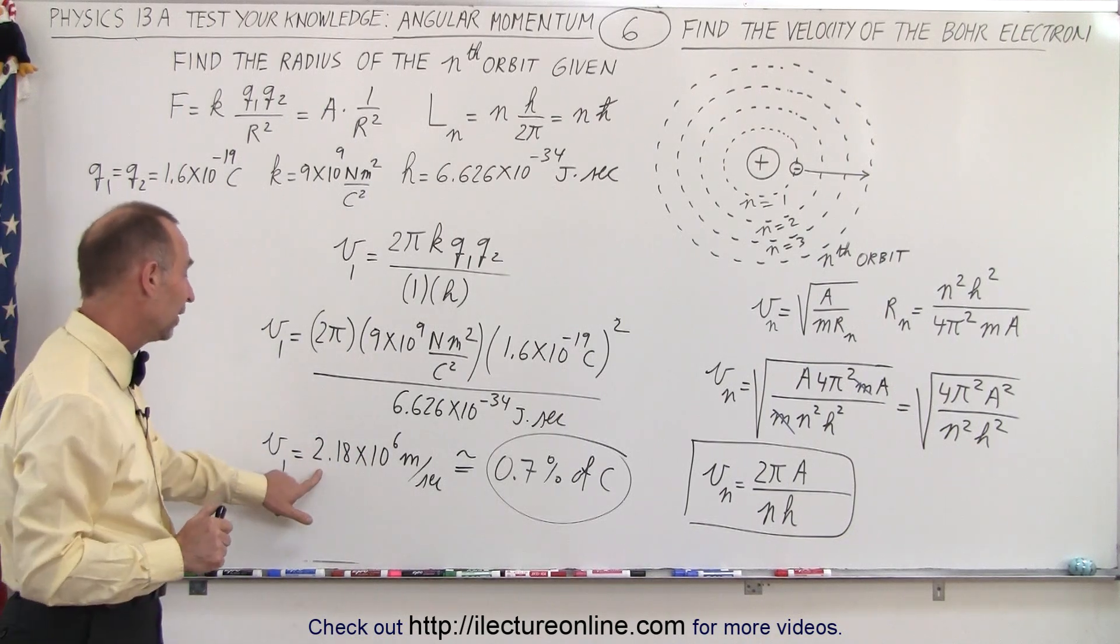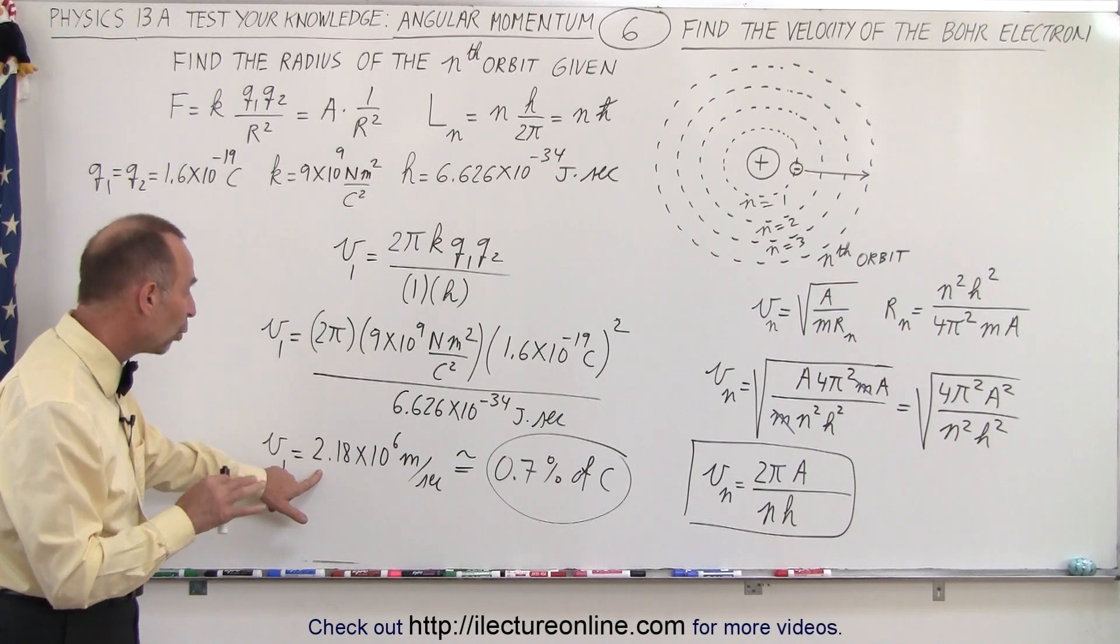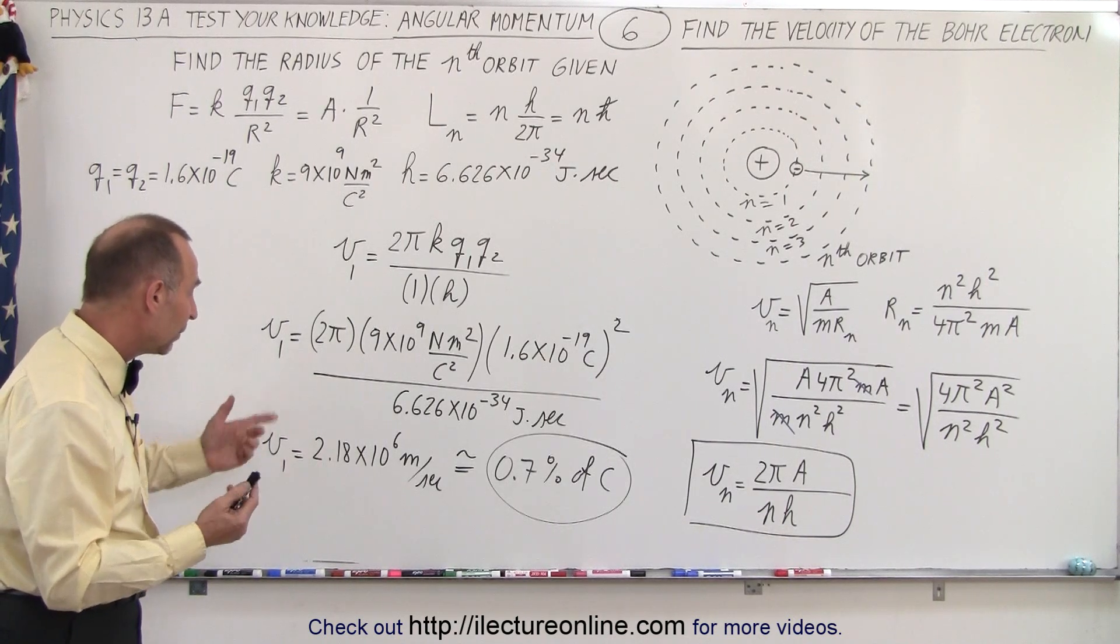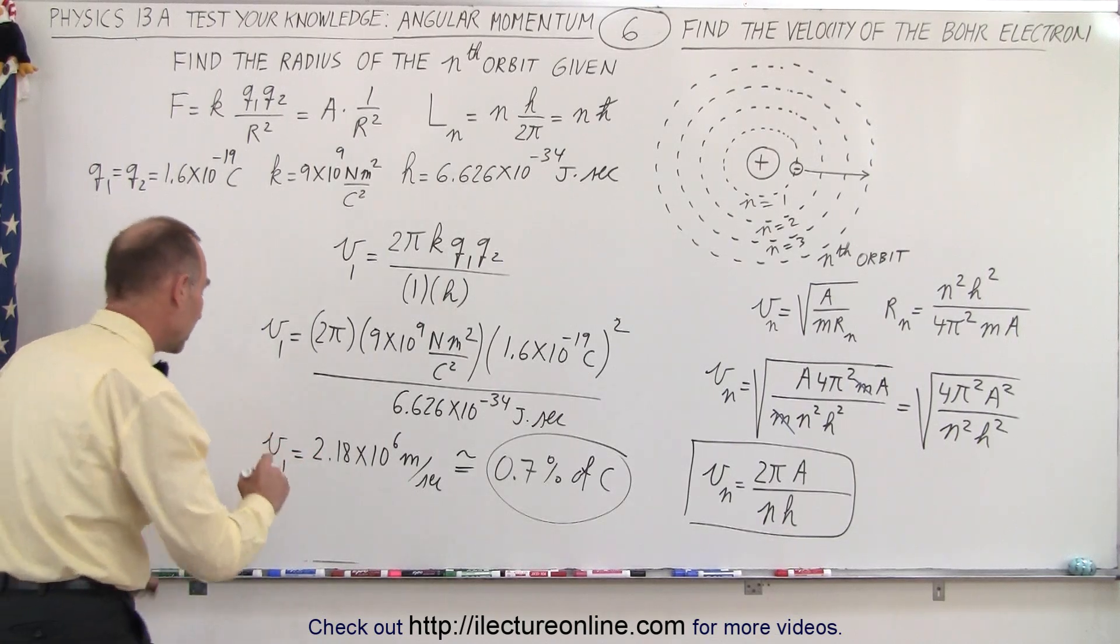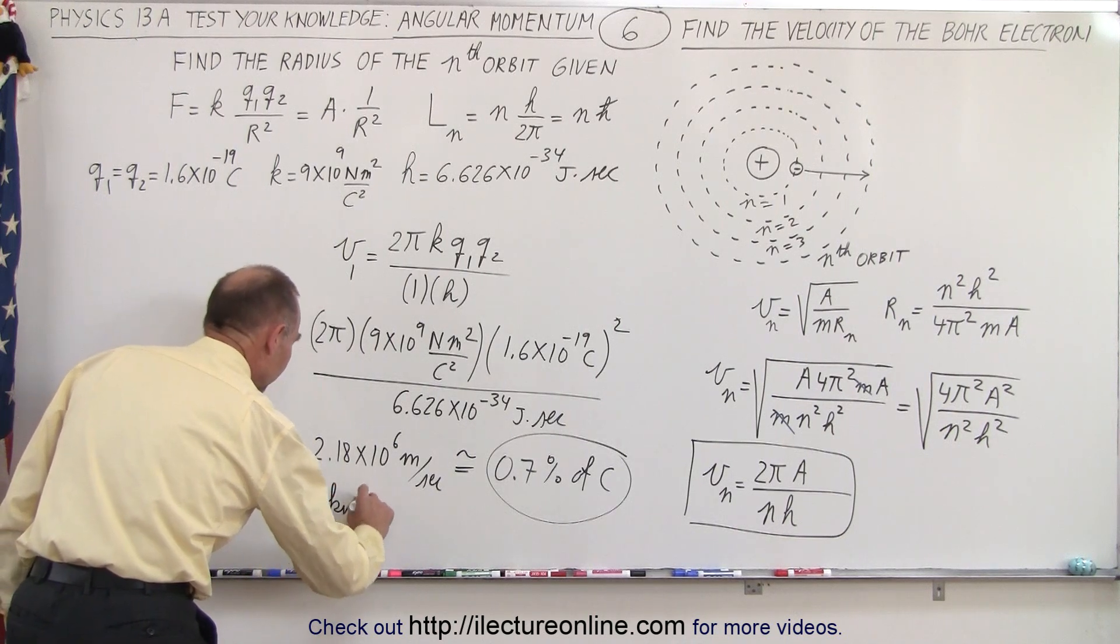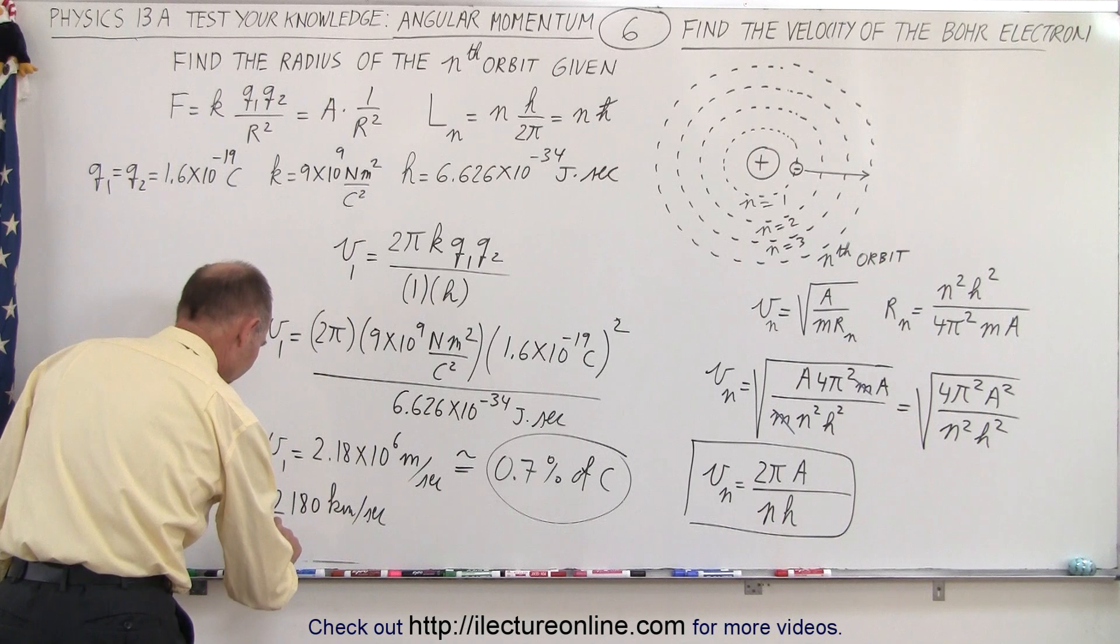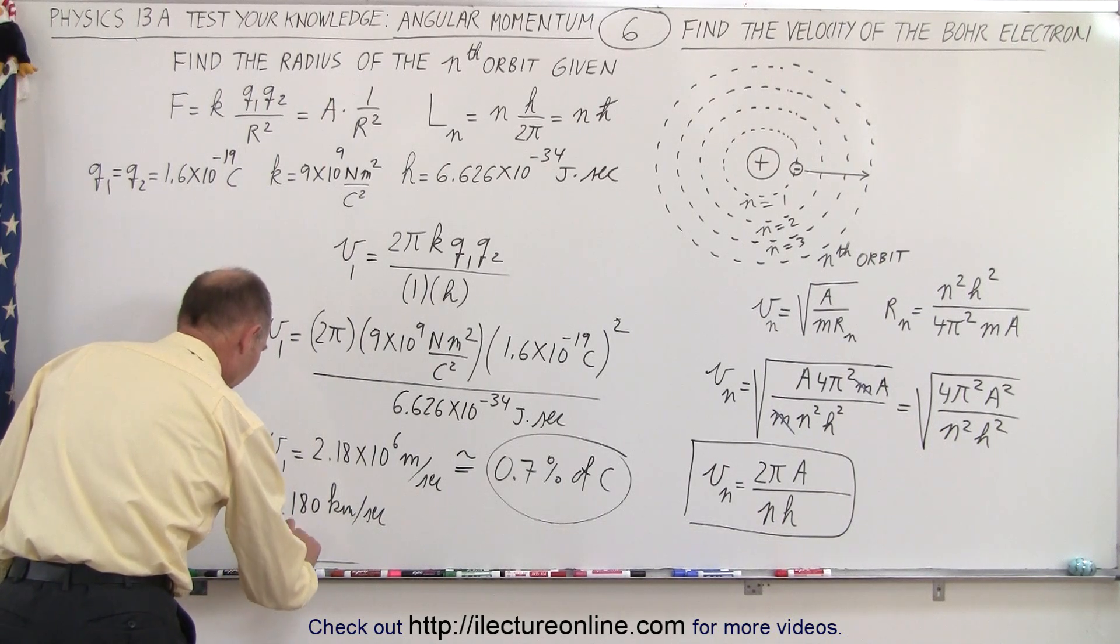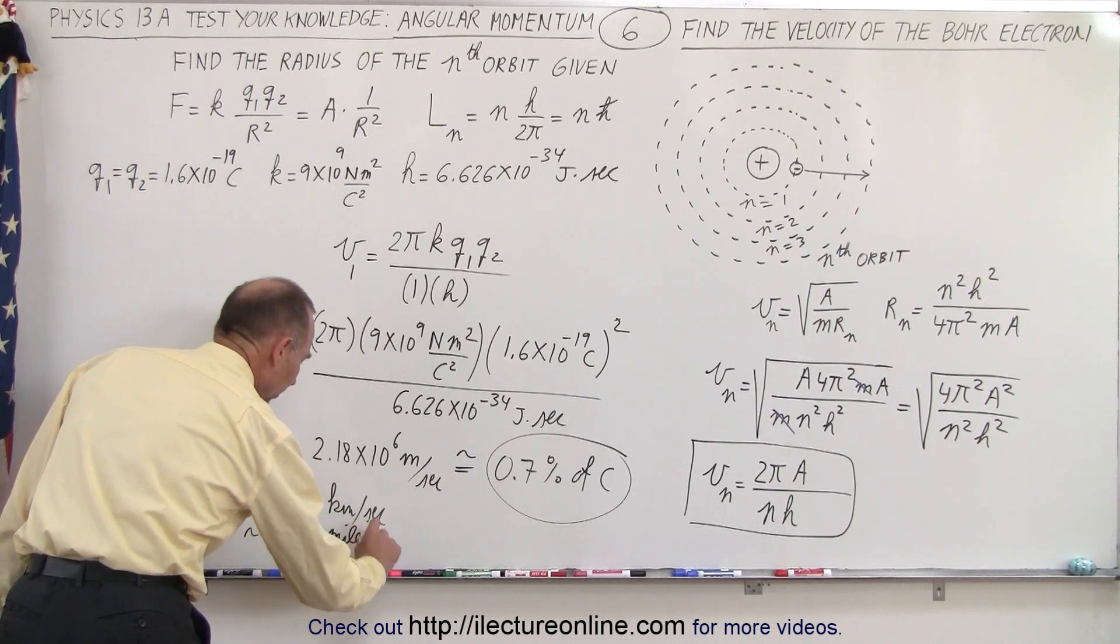To put that in perspective, that would be about 2,000 kilometers per second, or roughly about 1200, 1300, about 1300 miles per second. So, that would be about 2,180 kilometers per second, and convert it to miles, that would be about 1,400, that's approximately 1,400 miles per second.